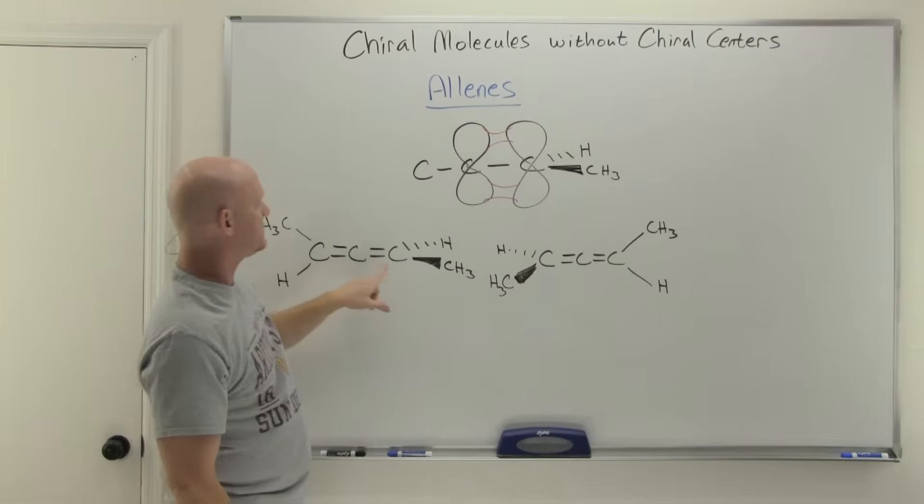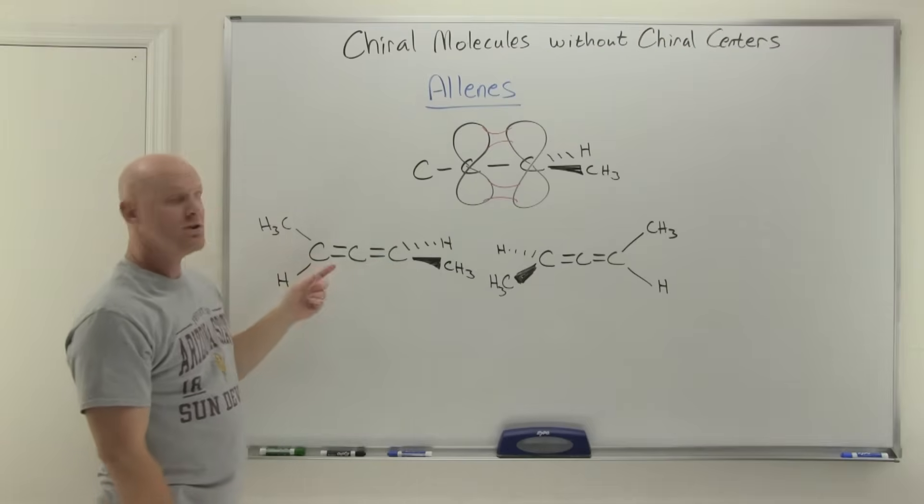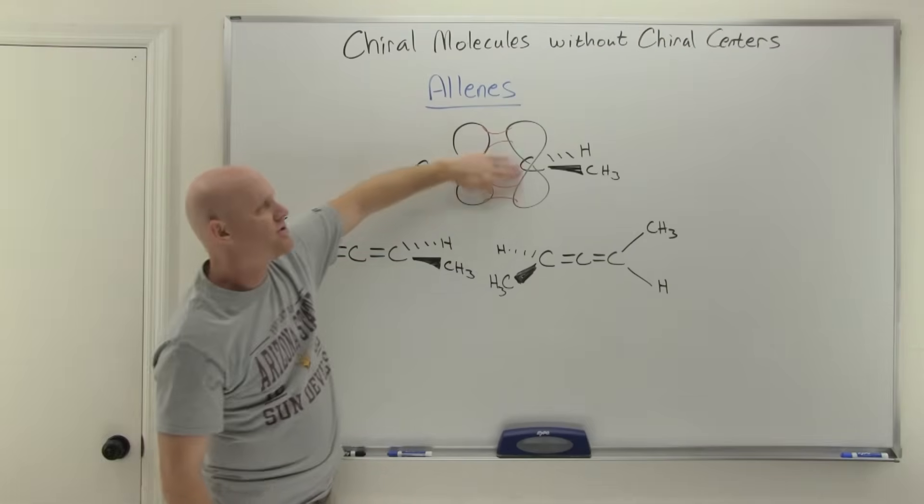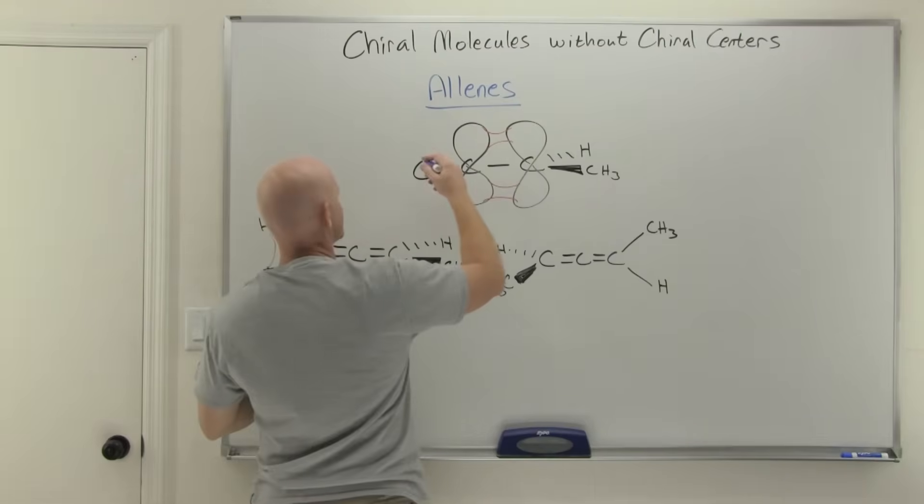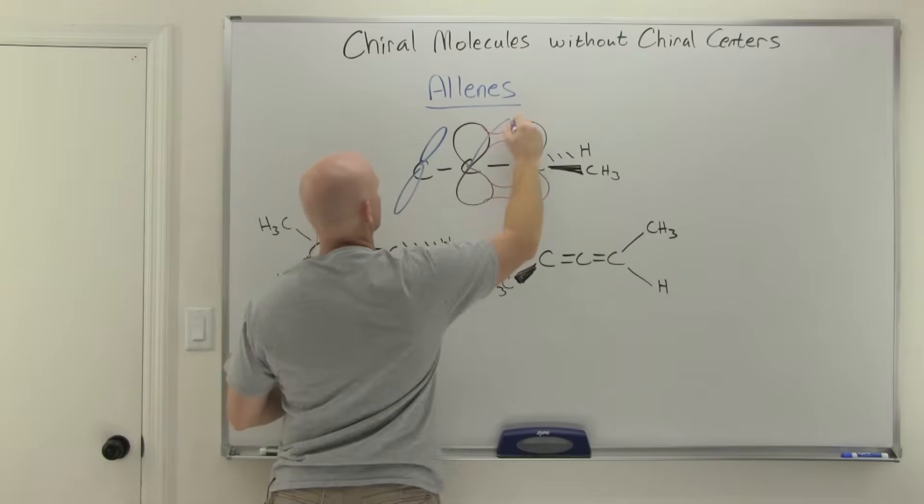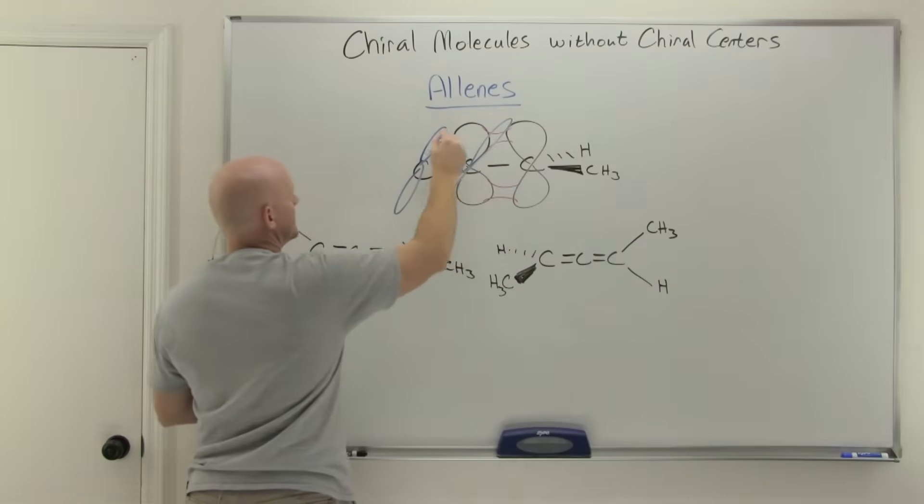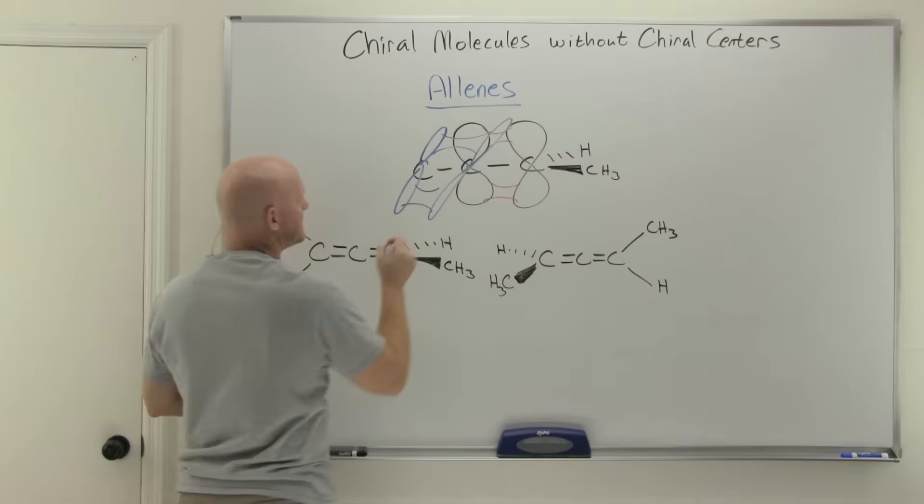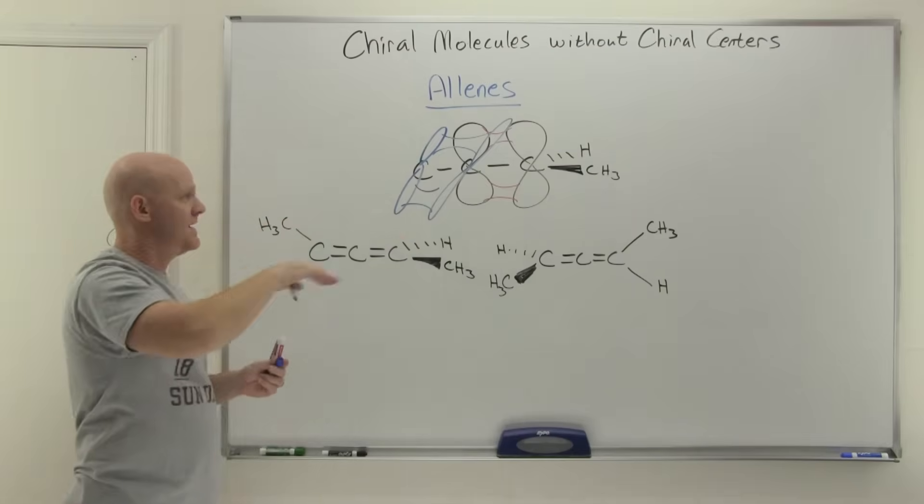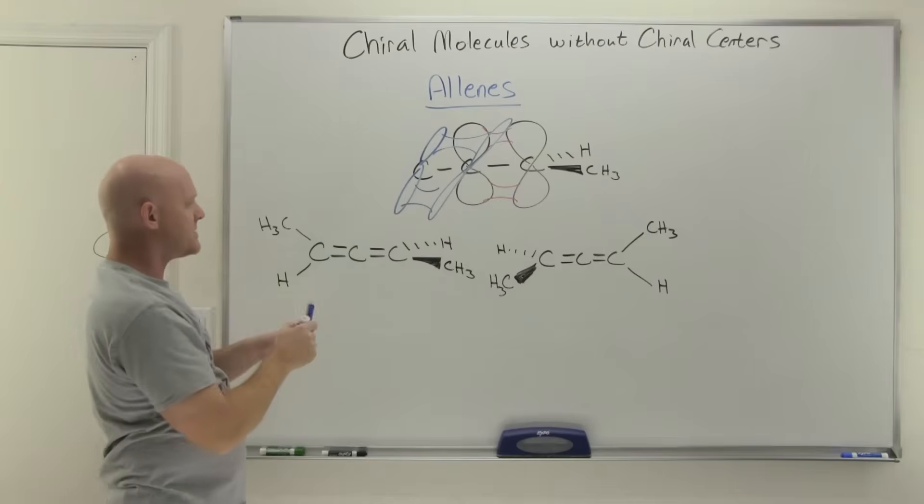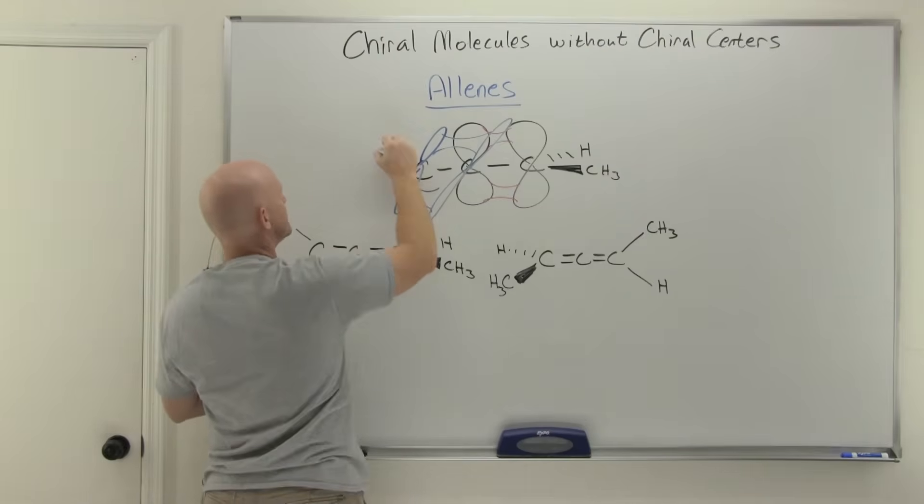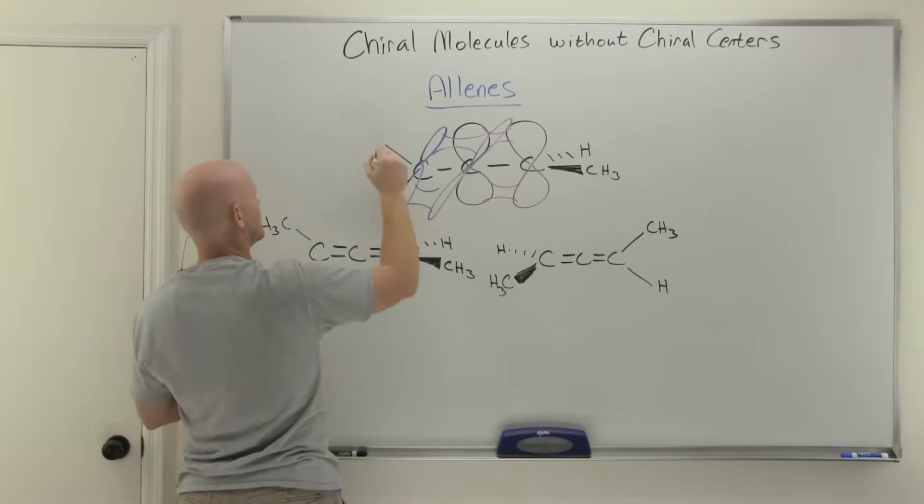But we've also got a double bond in this location right here as well. And if this p orbital has already been used to make this pi bond, then I can't use it again. And so instead of using the vertical p orbital, I'm going to have to use the horizontal p orbital instead. And we'll have some more sideways overlap here in this horizontal plane. But now if the pi overlap is in this horizontal plane, then the other bonds will be in this perpendicular plane here instead.